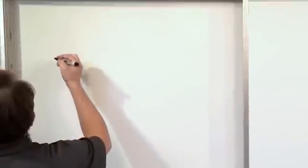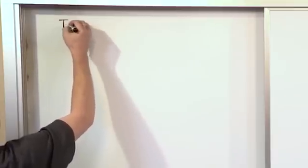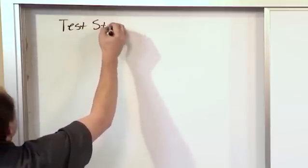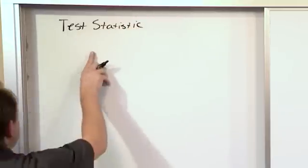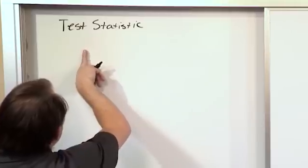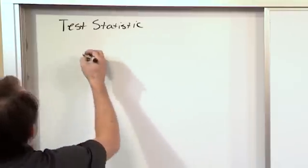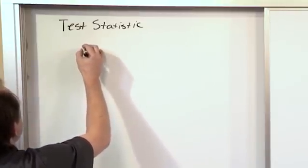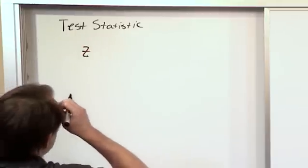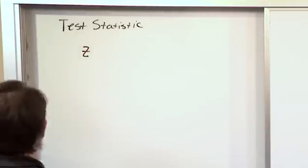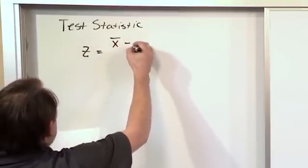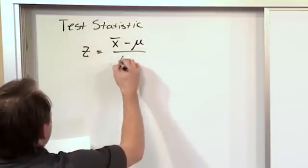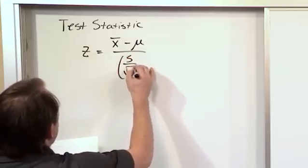There is one difference: because we're using a normal distribution, the test statistic changes. You remember before when we did a t distribution, we had t equal to some expression. Now when we're doing a normal distribution, we use the variable z — the z score is the variable we use with a normal distribution. The formula is: x-bar minus mu, over sample standard deviation divided by the square root of n.